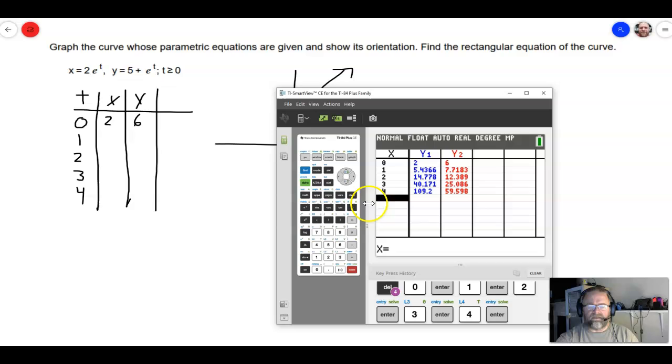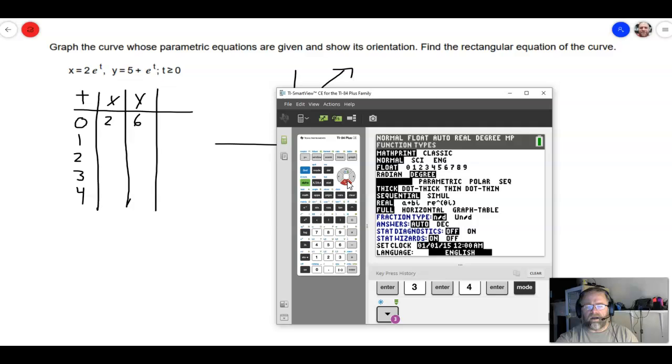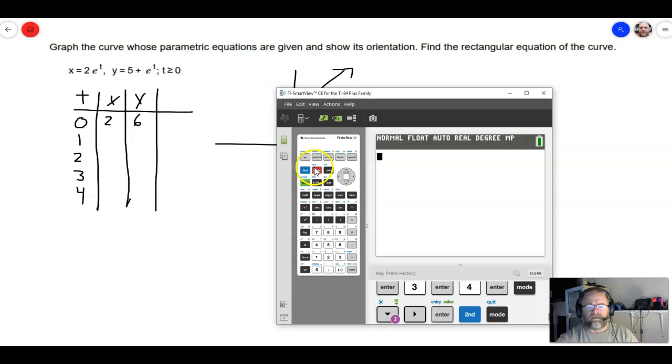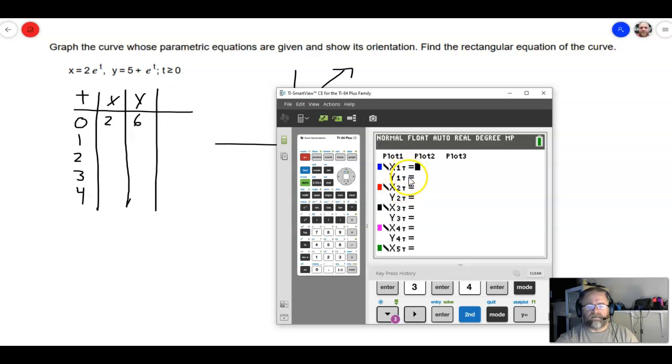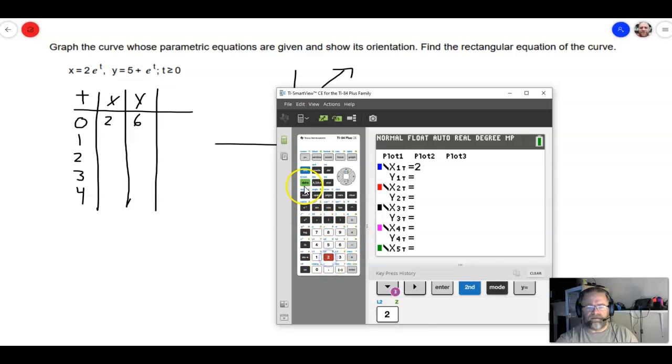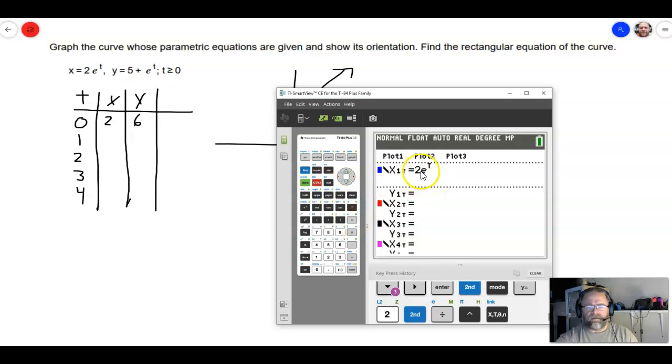So in order to do that, I'm going to go to mode, and I'm going to go down here where it says function, and I'm going to change that to parametric. So now let's get out of here. I'm going to go back to my y equals, and now notice that I have it in the parametric form here. So it allows me to put in two dependent variables. So I'm just going to put it in just like this. My first one is x, my second one is y. So this will be 2e to the t, and notice that when I'm in parametric form, it'll automatically put t in for my variable. That's really nice. And for the second one, we're going to have 5 plus e raised to the t.